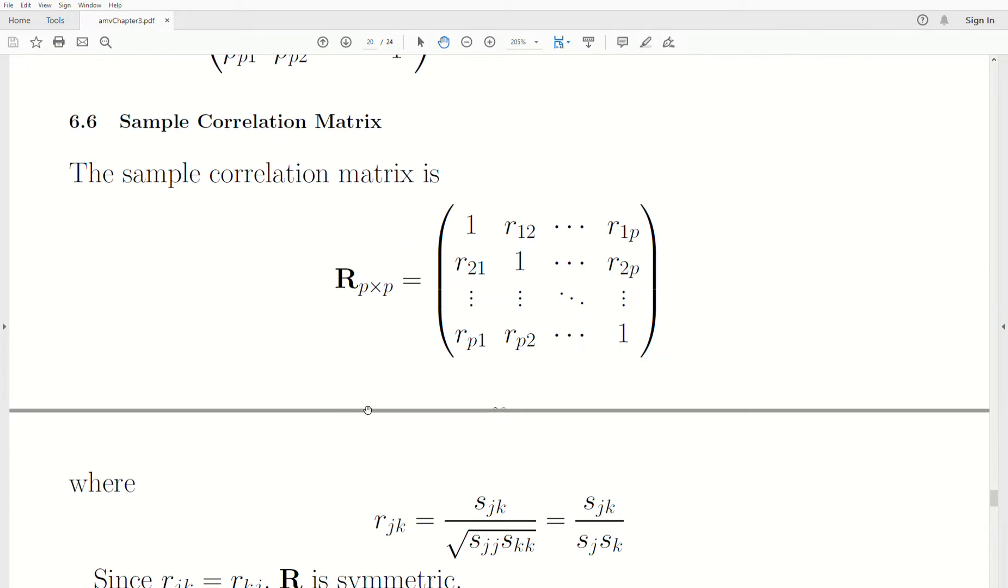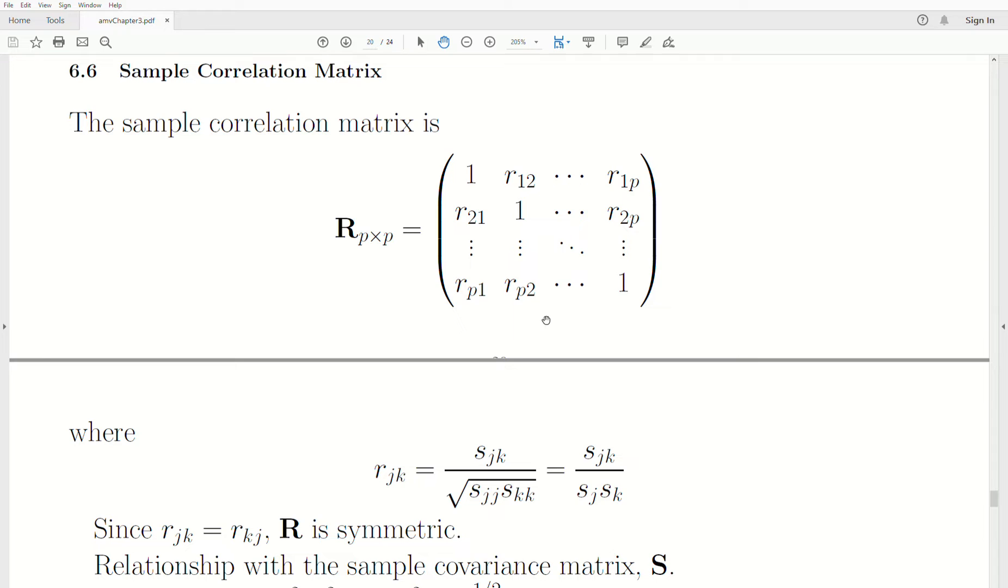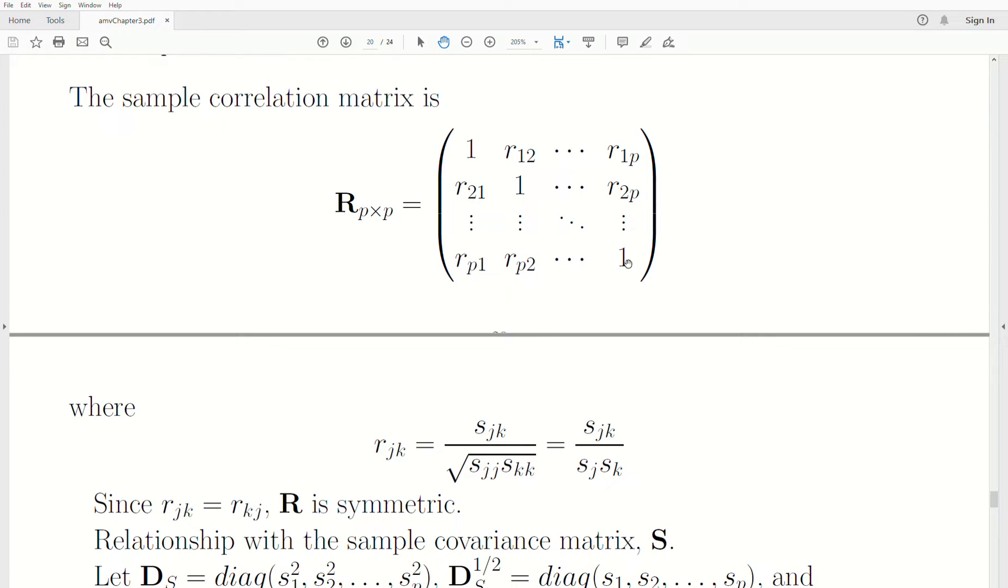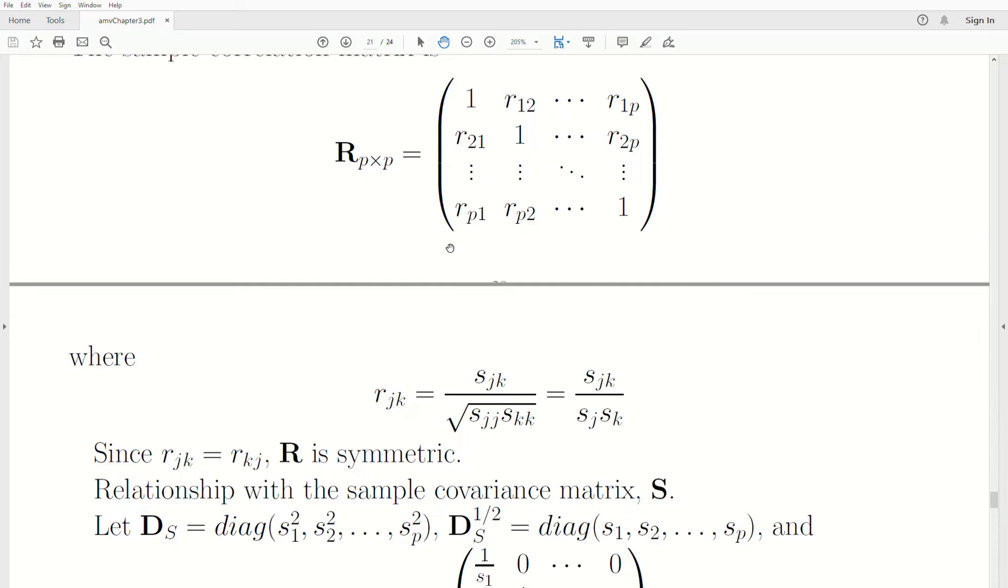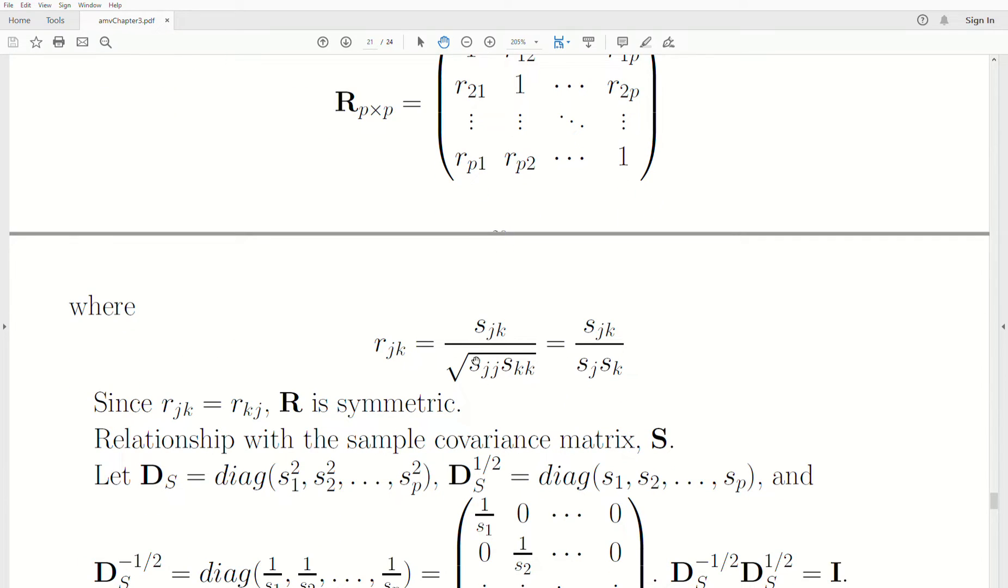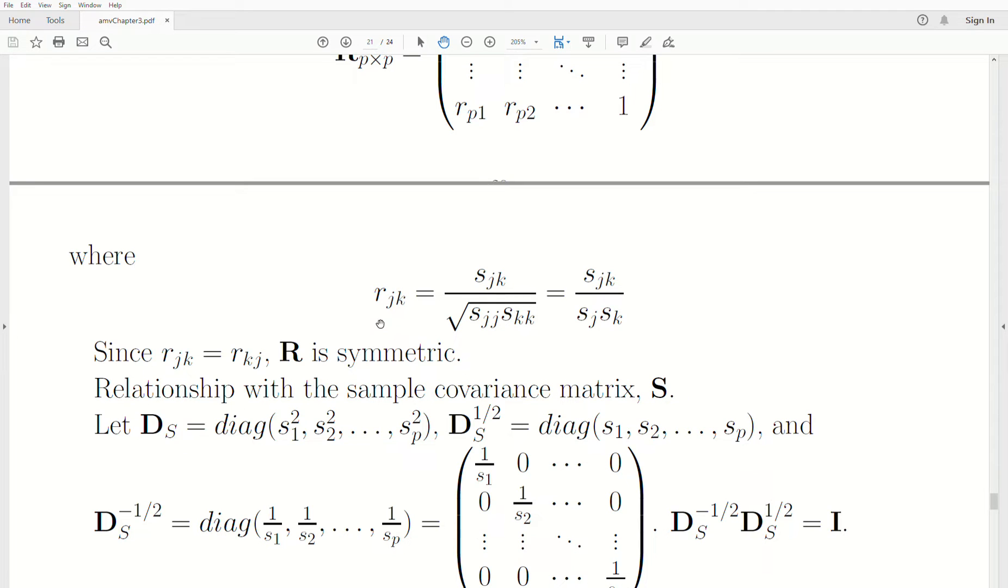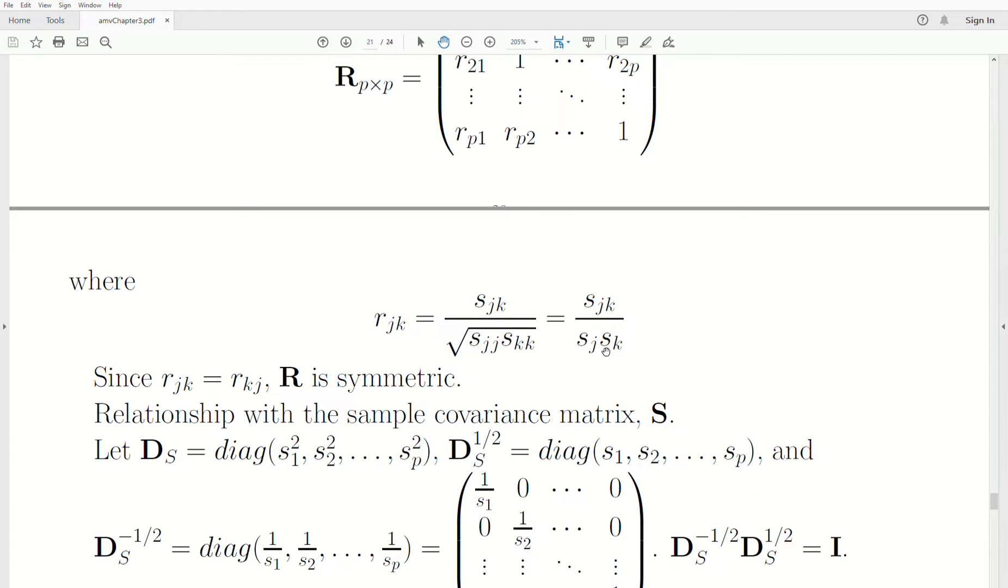Now the sample correlation matrix we denote by R, it's a P by P matrix, and it has the sample correlations for each two variables. So R21 is the sample correlation for variable 2 and variable 1, and R12 is the sample correlation between variable 1 and variable 2. They are equal, so this is a symmetric matrix. There's ones down the diagonal because each variable is perfectly correlated with itself. The formula is the sample covariance divided by the product of the standard deviations of those variables. It is symmetric.